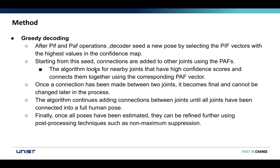After detecting each keypoint, they need to decode them into an output image. After the PIF operation, the decoder seeds a new pose by selecting the PIF vector with the highest value in the confidence map. Starting from this seed, connections are added to other joints using the PAF head network. The algorithm looks for nearby joints with the highest confidence score and connects them using the corresponding PAF vector. Once a connection has been made between two joints, it becomes final. The algorithm continues adding connections until all joints have been connected into a full human pose. Finally, the poses can be refined using post-processing techniques such as non-maximum suppression, which has also been used in other algorithms like YOLO.